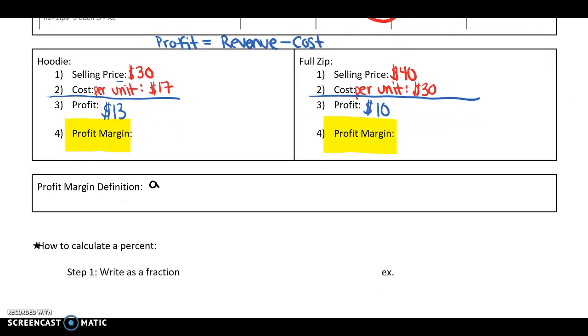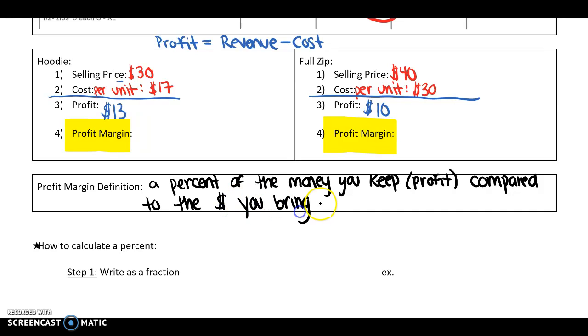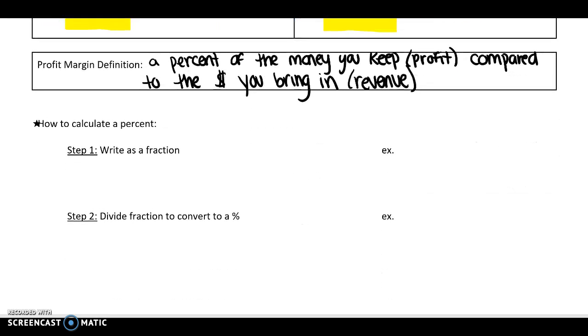In my own words, a profit margin is a percent of the money you keep. When I say the money you keep, that's called profit. A profit margin is the percent of the money you keep compared to the money you bring in. A profit margin is the percent of the money you keep compared to the money you bring in. So in order to understand profit margins, we need to understand how to calculate percents. I'm going to pause the profit margin for a second and talk about percents here. So in general, how you calculate a percent is you first write whatever the relationship is as a fraction.